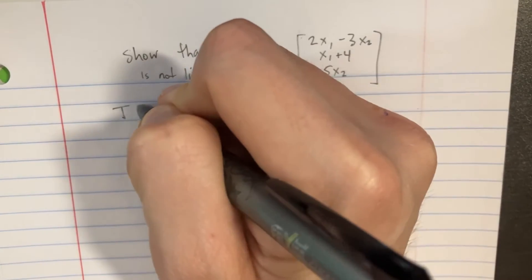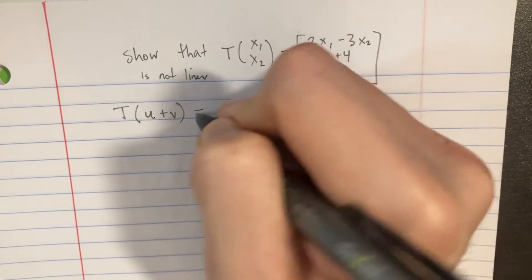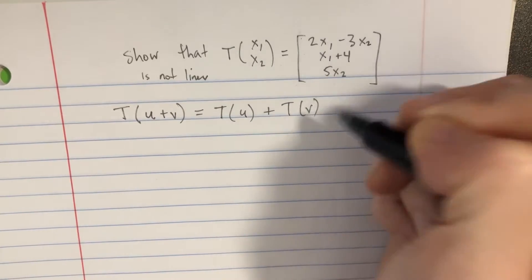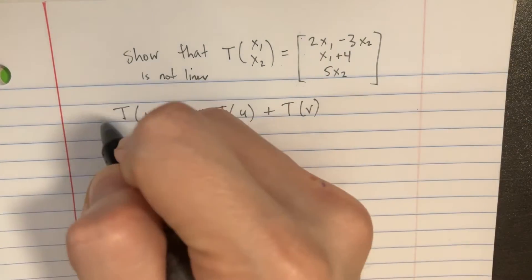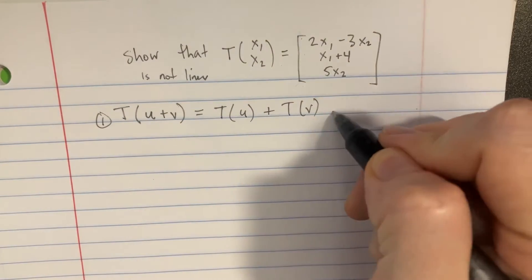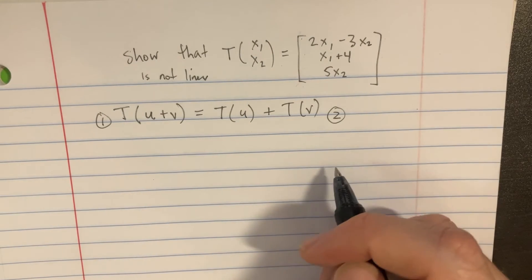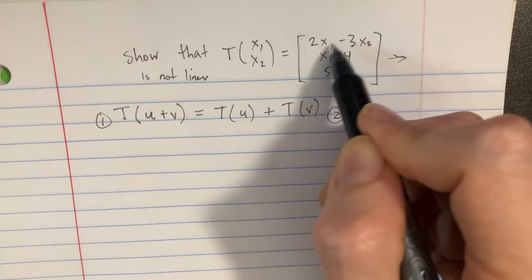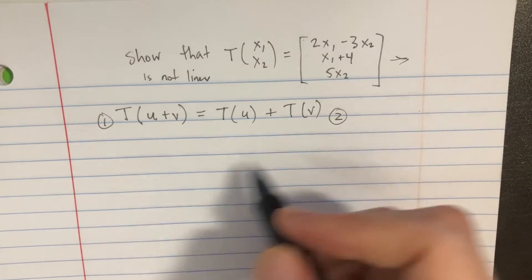So we'll start by saying that T of U plus V is supposed to be equal to T of U plus T of V. We're going to have to do two different transformations here. This is the first side, the left side, and this is the right side. We're going to do the transformation twice, and then we're going to see what happens at the end if they're equal. Sometimes we have to reduce this, but the nice thing is it's actually completely reduced right now, so we can go straight into our proof.